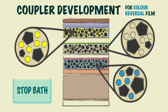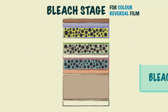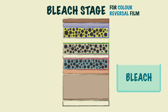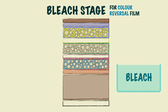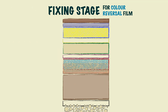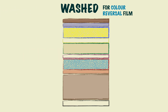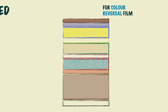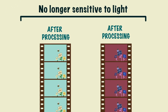At this point, similarly to colour negative film, bleach turns the black silver back into silver halide so that it can be washed away in the next stage by the fixer. After this, the emulsion is washed and finally dried. Once these stages are complete, the emulsion is no longer sensitive to light and doesn't need to be kept in the dark, as the images are permanently captured on the film strip.